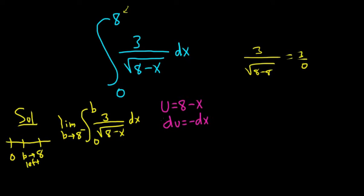Now what we have here does not match what we have in the integral. We have a 3DX. So what I'm going to do is I'm going to multiply by negative 3 to make everything match. So it'll be negative 3 DU equals 3DX.